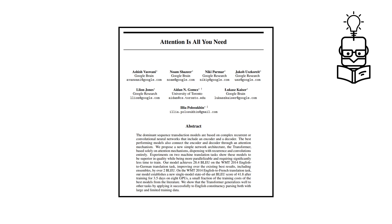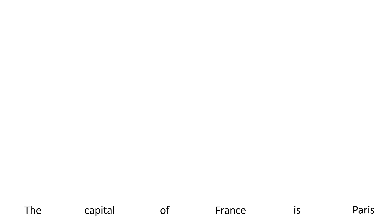These models have quite revolutionized the natural language processing world. The attention mechanism was applied for machine translation in the paper 'Attention Is All You Need', and the input to the model was a sequence — for example: 'the capital of France is Paris'. For each token in the sequence, the model created three vectors.